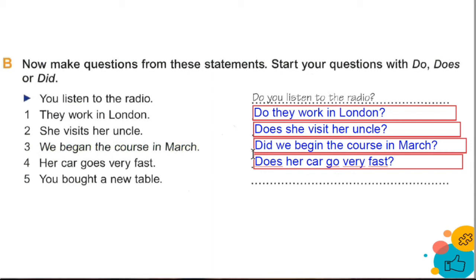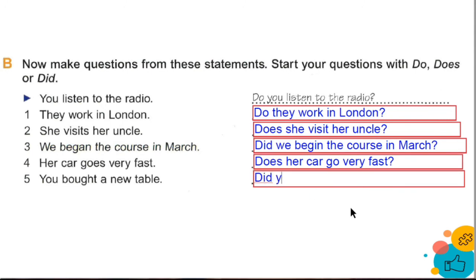Number five: You bought a new table. Did you buy a new table? ¿Compraste una nueva mesa? Profesor, ¿por qué el verbo cambia de 'bought' a 'buy'? Porque cuando preguntamos o negamos en el pasado o en el presente, la regla de los verbos — ya sea la S o la forma del pasado — se queda anulada. Esa parte es básica, señores, no pueden olvidarse: la regla se anula.